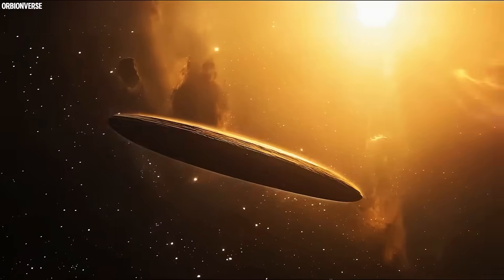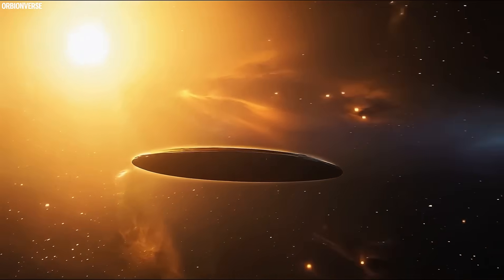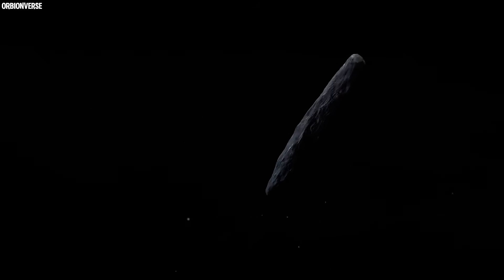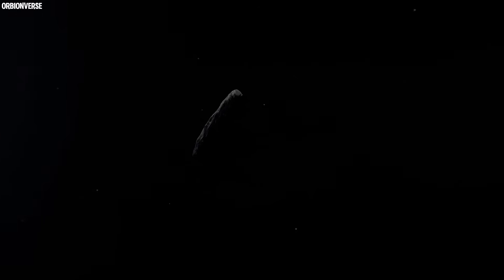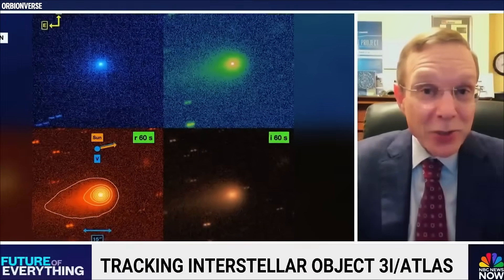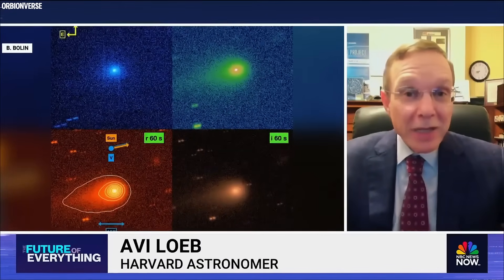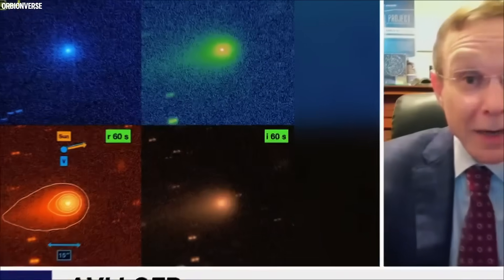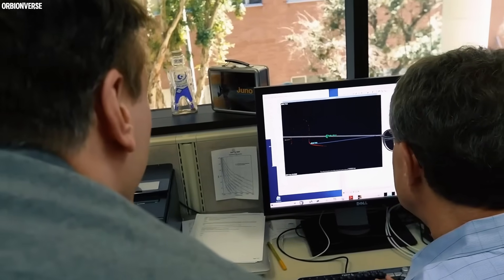Today, the scientific consensus is careful but fascinated. 3i-ATLAS is most likely a natural interstellar comet, but one with extreme and unique properties. Some researchers, like Harvard's Avi Loeb, have raised the idea of an artificial or engineered object - not as a claim but as a thought experiment. Still, most astronomers insist the data so far fit natural explanations, even if those explanations challenge what we know about cometary science.